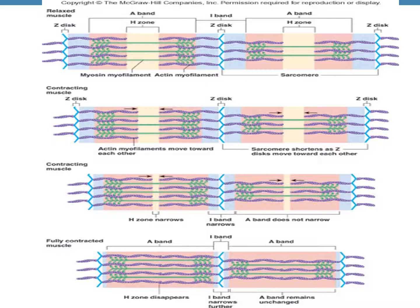In the bottom figure it shows a fully contracted muscle. The H zone has totally disappeared because the two actin filaments have come closest to each other. That means the two Z lines are also at the closest distance and the sarcomere has shortened. So when the sarcomere shortens, the myofibril contracts and the muscle contracts.